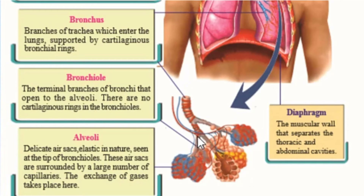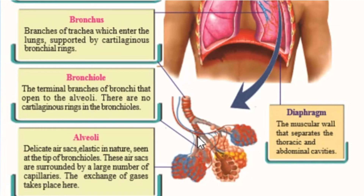What is alveoli? See the diagram. It is an air sac, elastic in nature, seen at the tip of the bronchioles. These air sacs are surrounded by a large number of capillaries, and the exchange of gas takes place here.